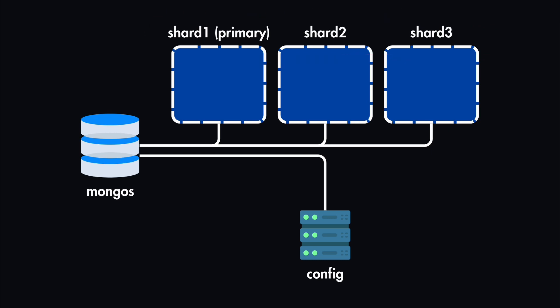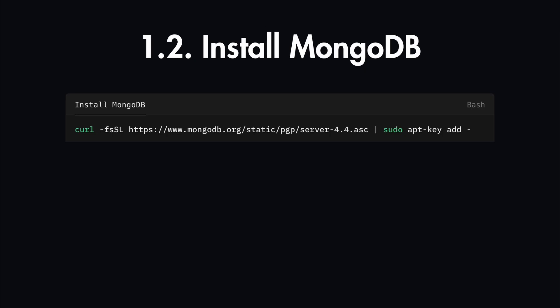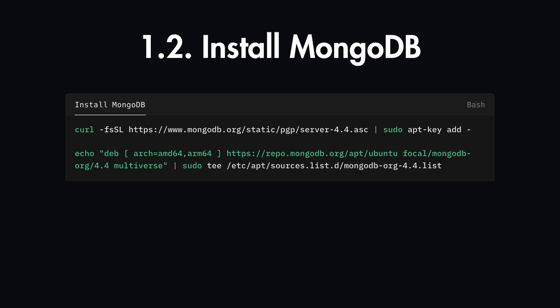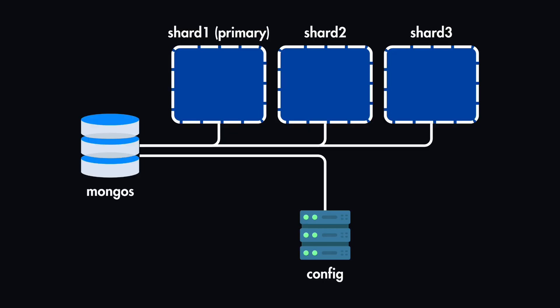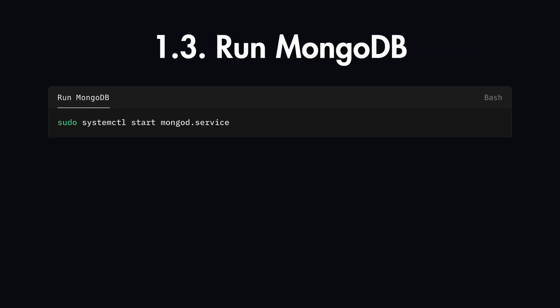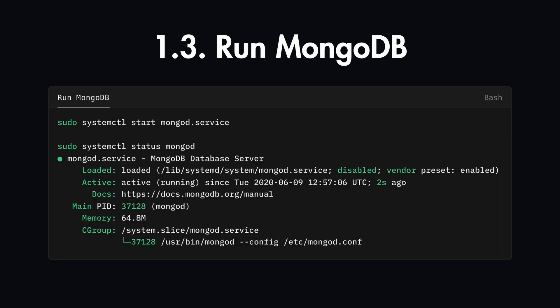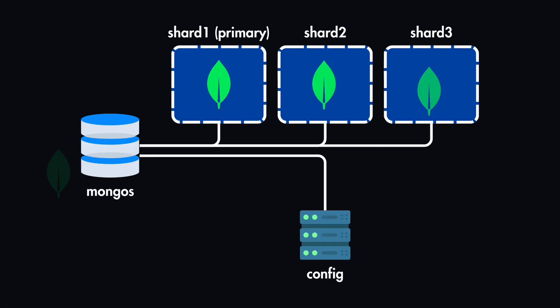We need to install MongoDB on all of these servers initially. Since MongoDB signs its software with a GPG key, we need to import this key for the MongoDB version we want to install. Next, we create a new sources file for MongoDB, which will be located in this directory. Then we need to update the server's local package index so it knows where to find the mongodb-org package. After this step, we are ready to install MongoDB with this command, and then we can run MongoDB on all of these servers and check the service status — you should see that it is active on all of them.